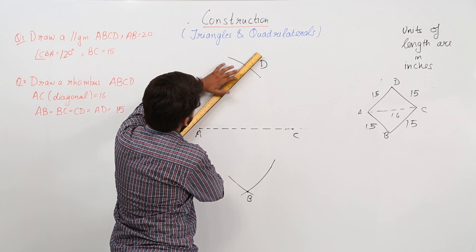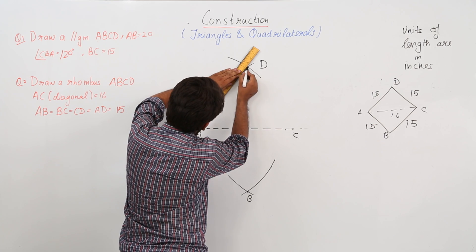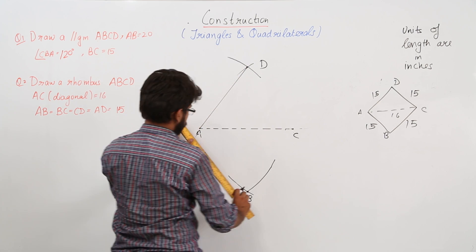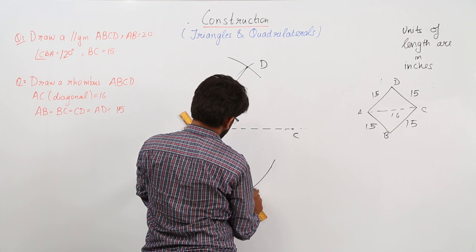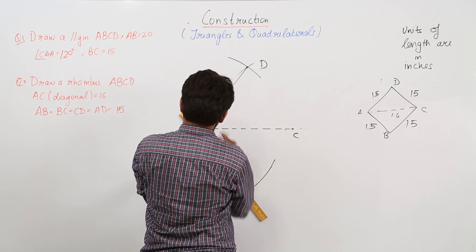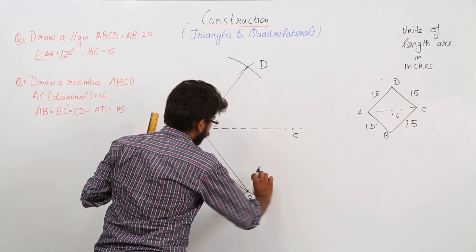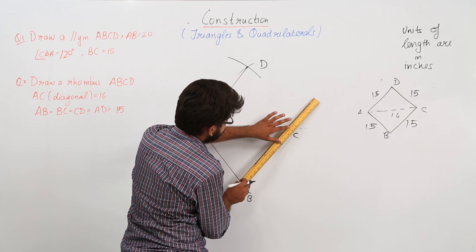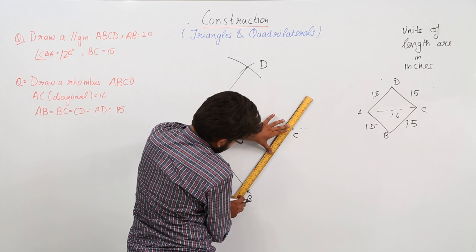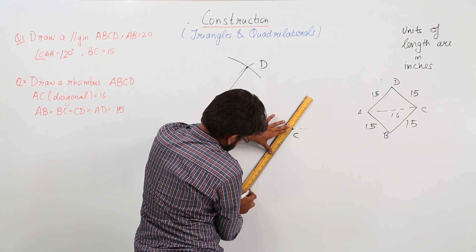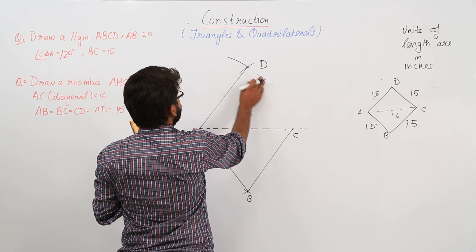Now all you have to do is you have to join them. So this is your AD, this is your AB. We already have point of intersection, so no use of these arcs, remove these arcs.